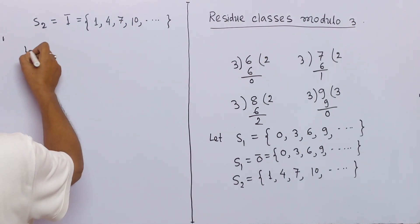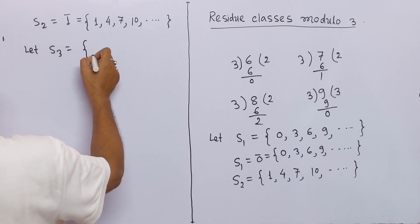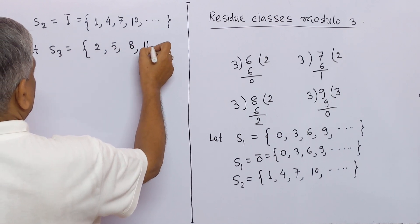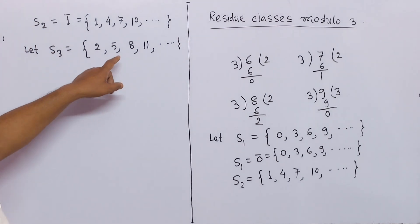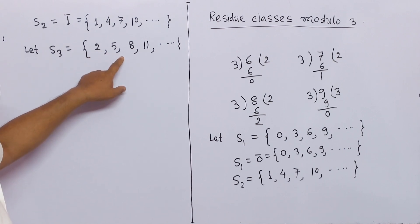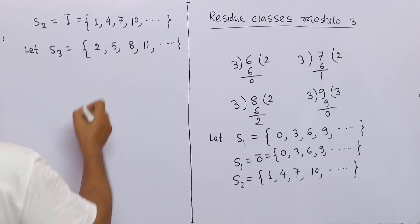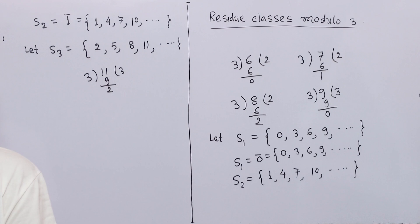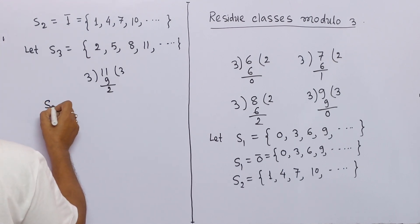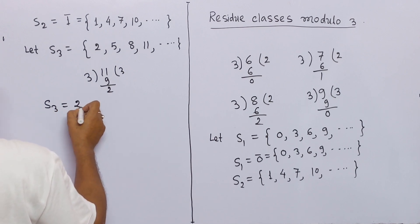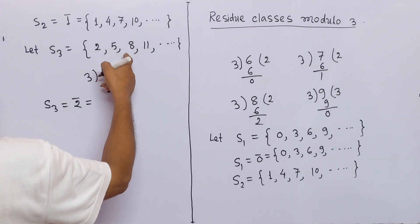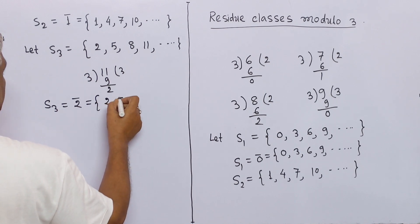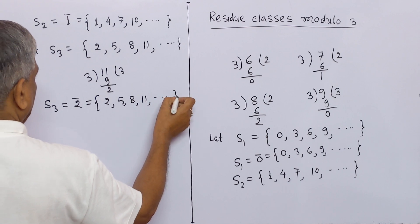Similarly, let S3 be a set containing integers 2, 5, 8, 11, ... If we divide any member of S3 by 3, we get remainder 2. For example, if we divide 11 by 3, we get remainder 2. So we may write S3 = 2̄, which is the set {2, 5, 8, 11, ...}.